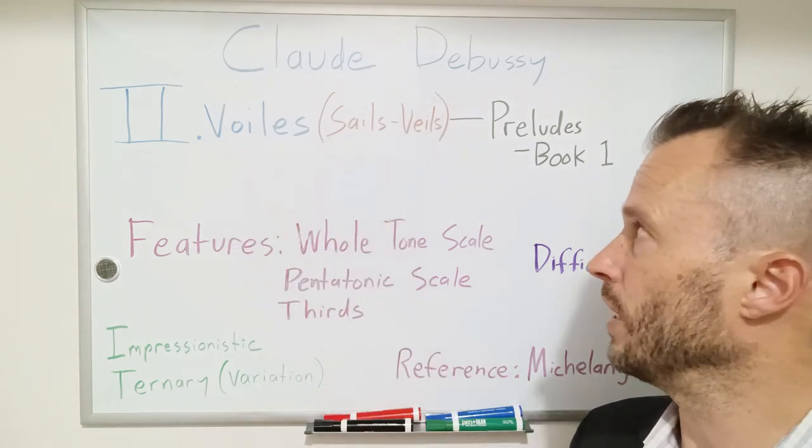Hello, Christopher Brent here, coming to you today with a piano repertoire guide video on Debussy's Prelude No. 2 from Book 1, which is entitled Voile